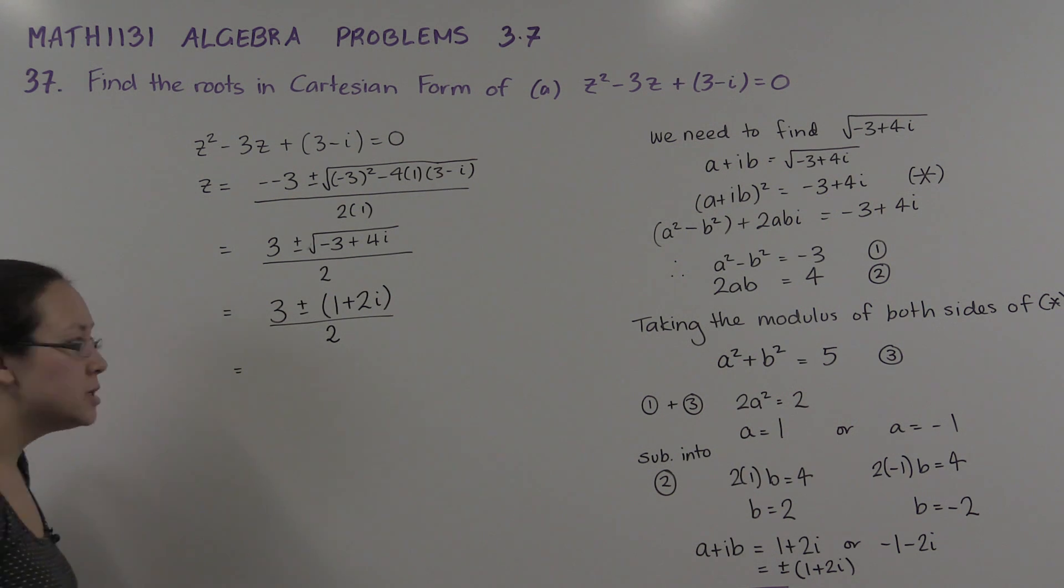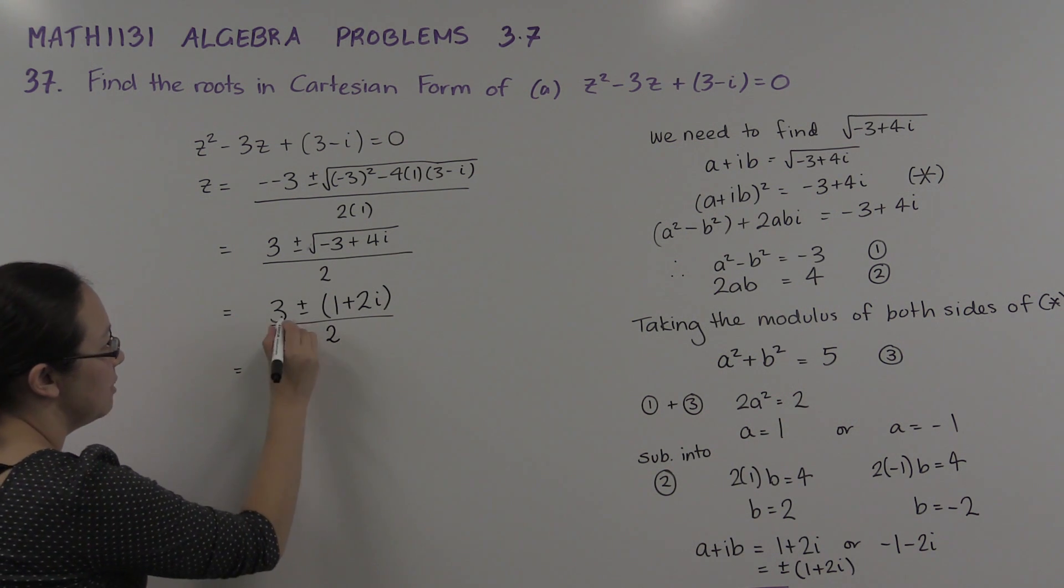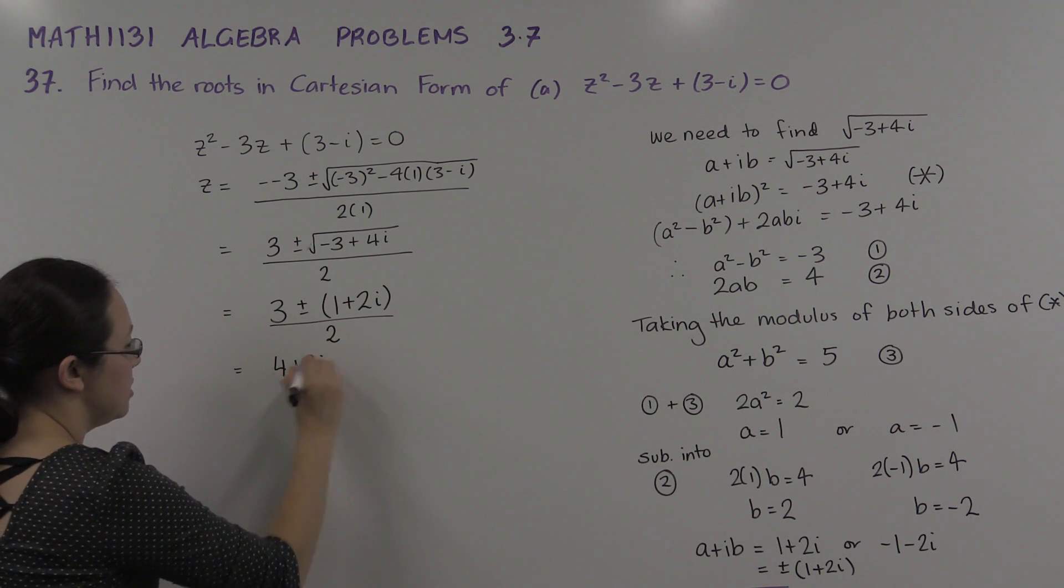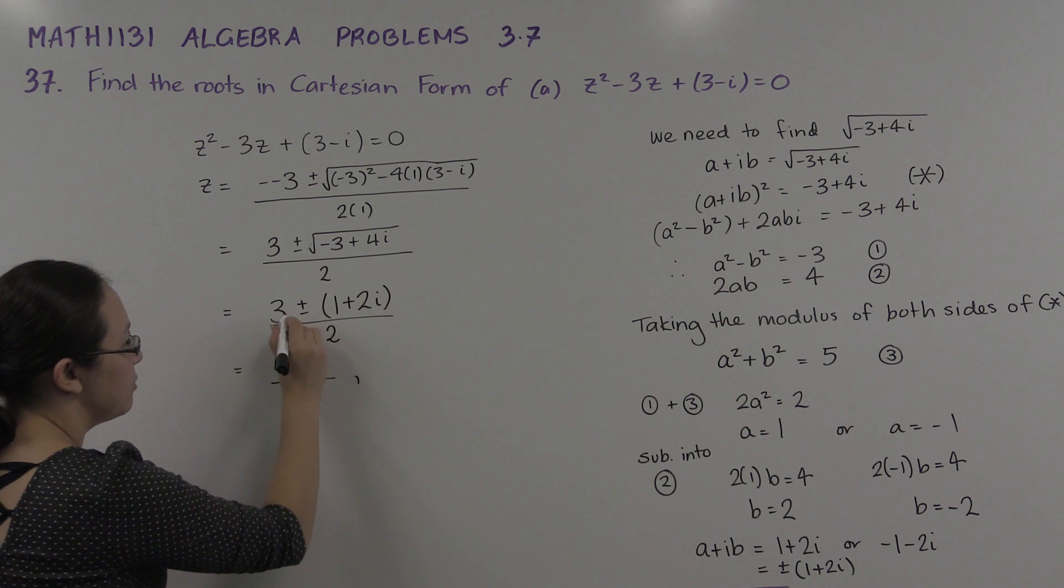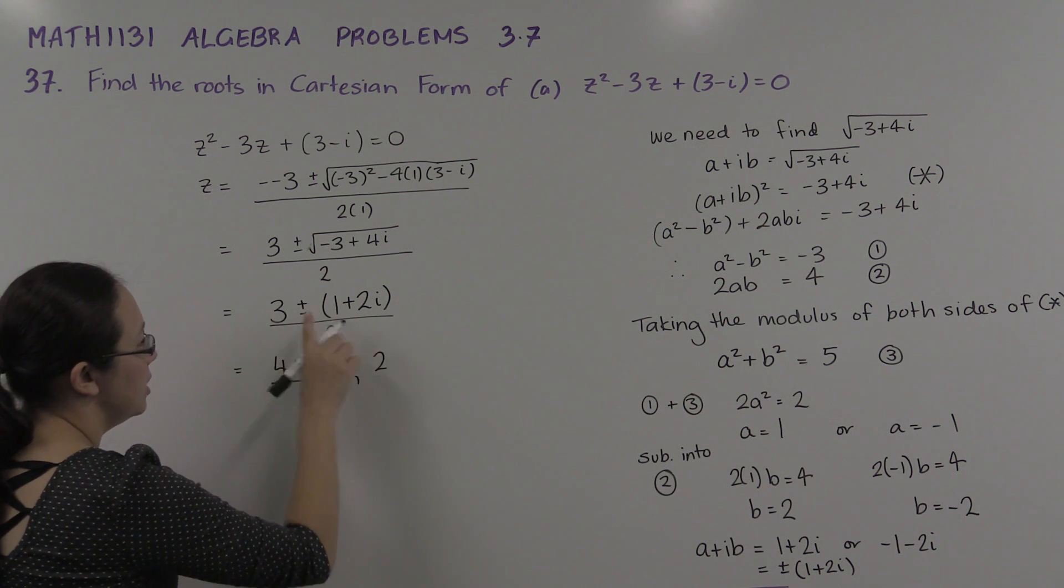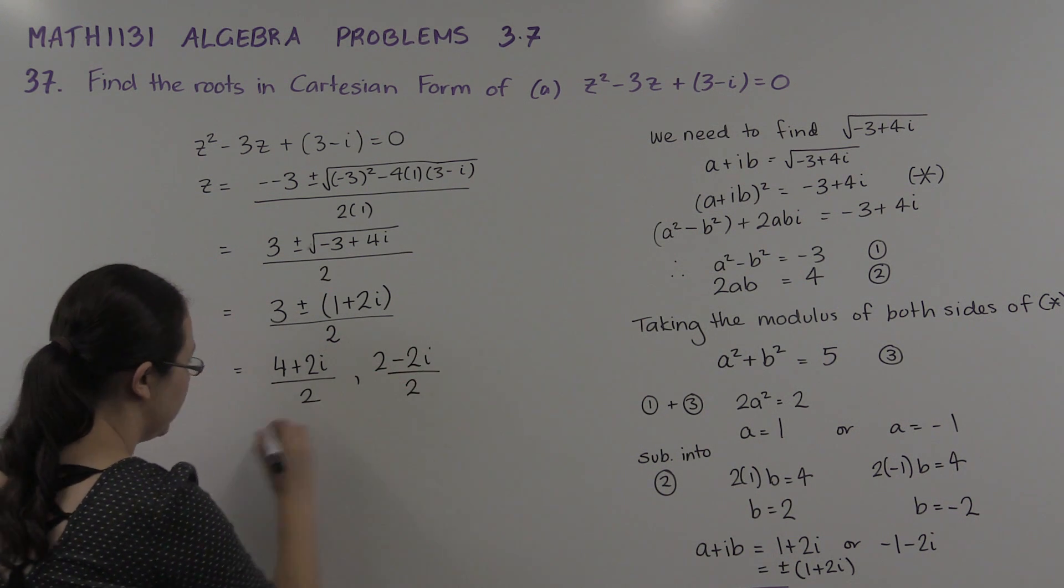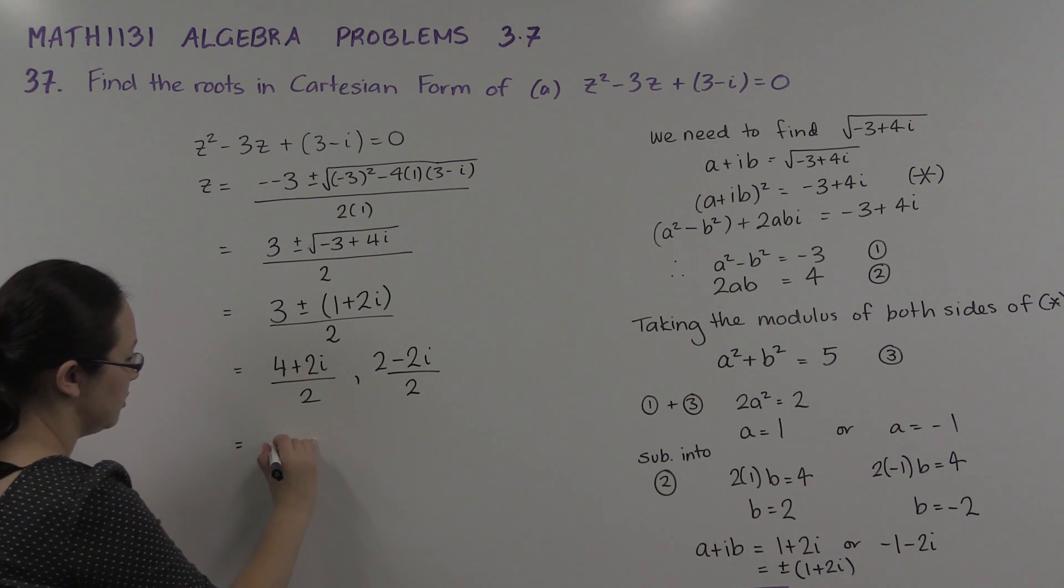And so just computing that, we either have (3 + 1 + 2i)/2, which is (4 + 2i)/2. Or we have (3 - 1 - 2i)/2. And simplifying, just dividing everything by 2 there, we have 2 + i and we have 1 - i.